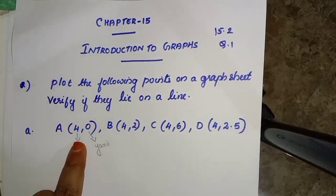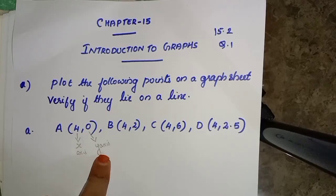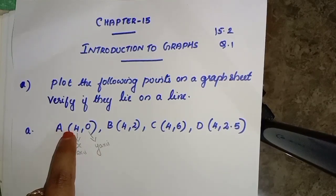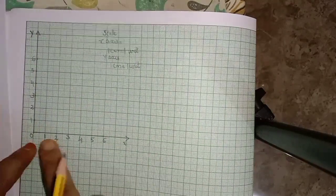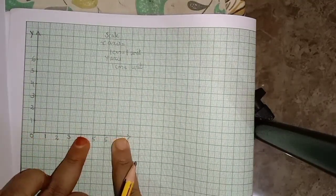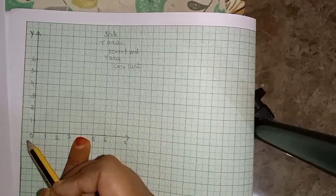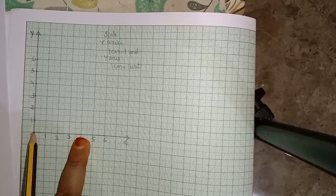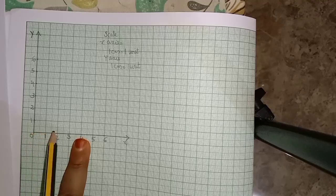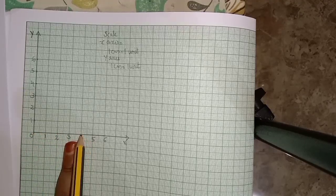So, what do I say? 4, 0 — that means x-axis is 4, y-axis is 0. Now we have the point on the x-axis at 4. Y-axis is 0. Then we have minus — that is 4. We have to mark this. Because 0 on the y-axis is 0. Now we mark this. That means A is at (4, 0). So we mark this: A, 4, 0.